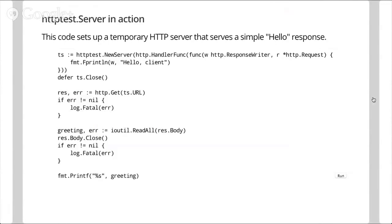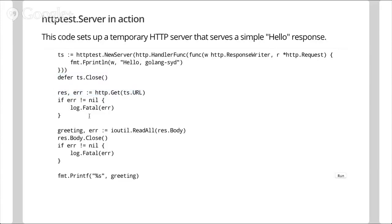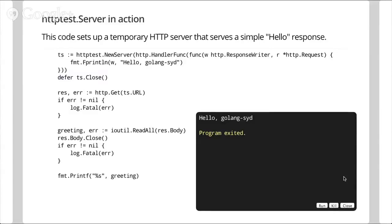A simple example of the test server in action: create a test server using httptest.NewServer, pass it a handler function that writes 'hello golang' as the HTTP response. Defer ts.Close so the server shuts down when the test exits. Then make an HTTP GET request to the test server's URL — if that fails, fatal out — read the body and print it to standard output. Running it sets up the server, makes the request, gets the string, and prints it.